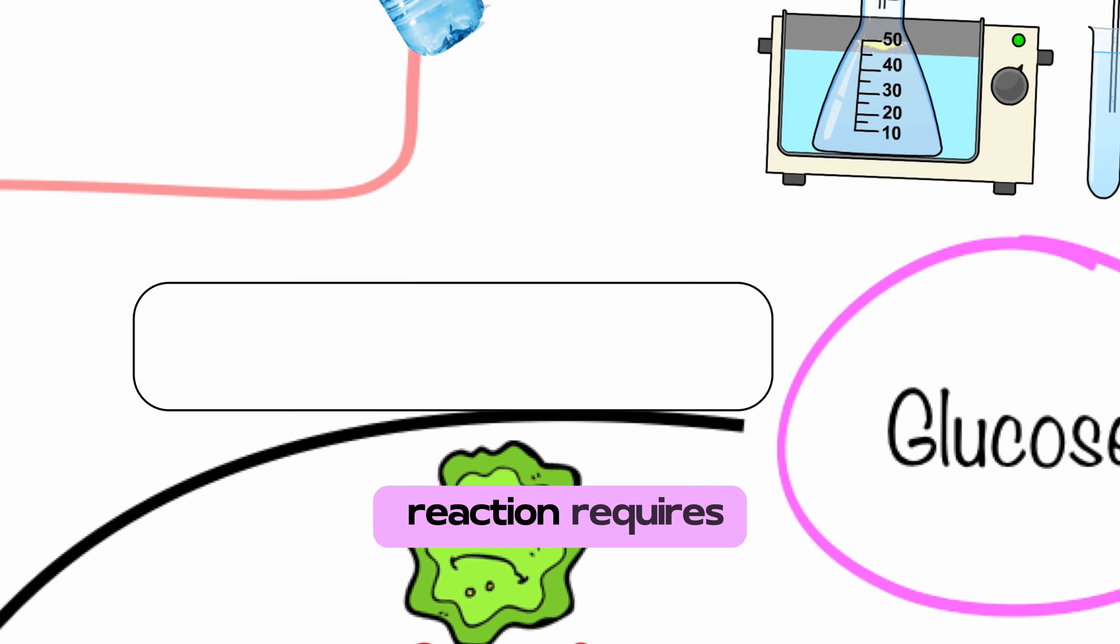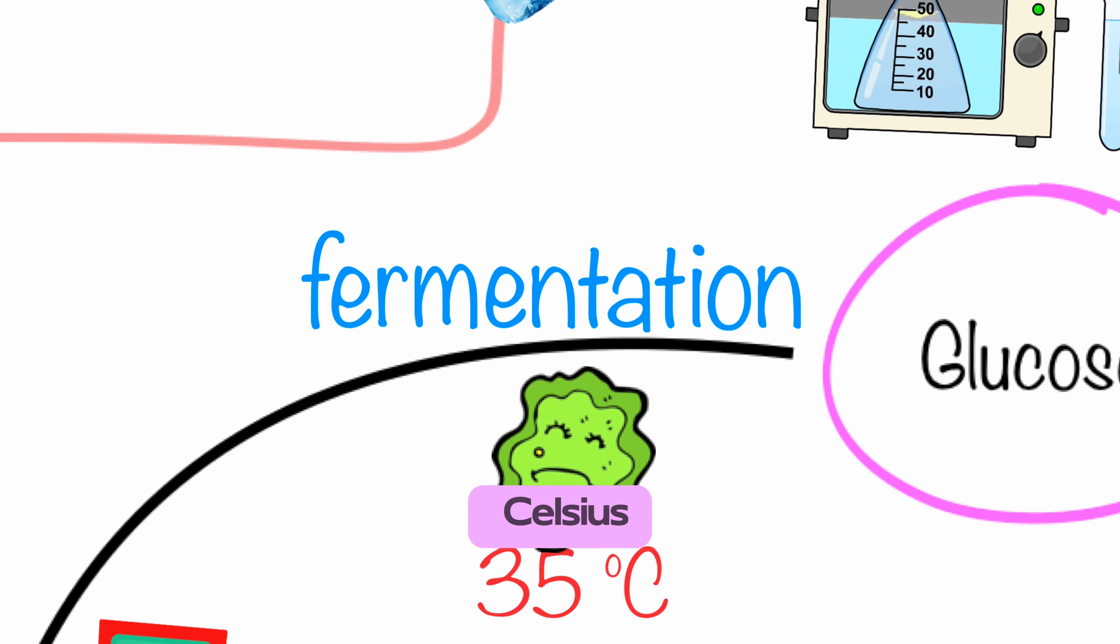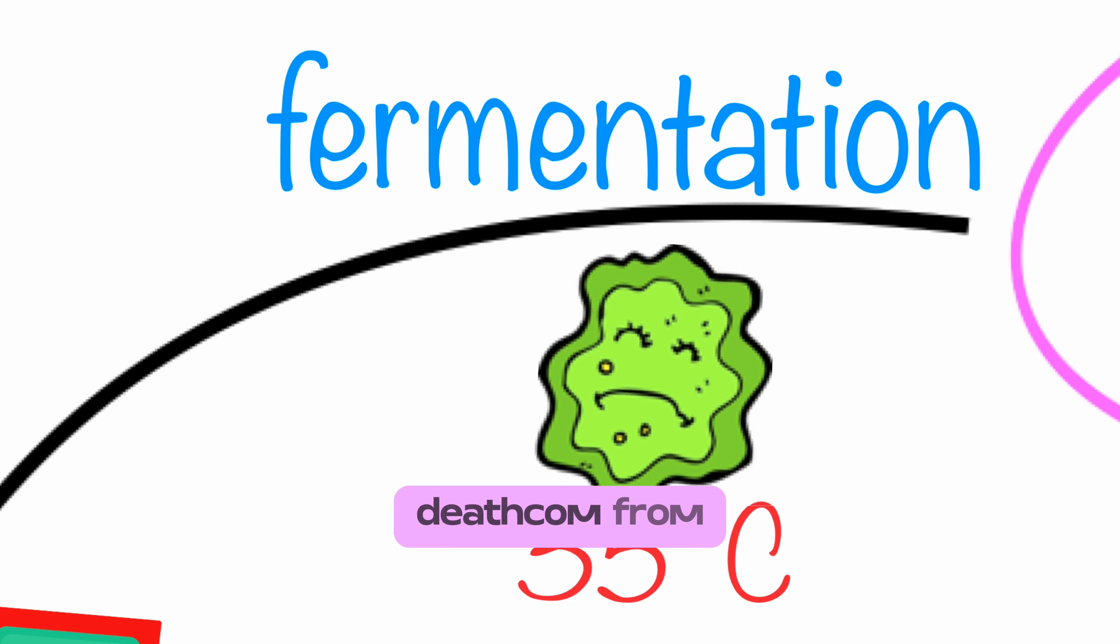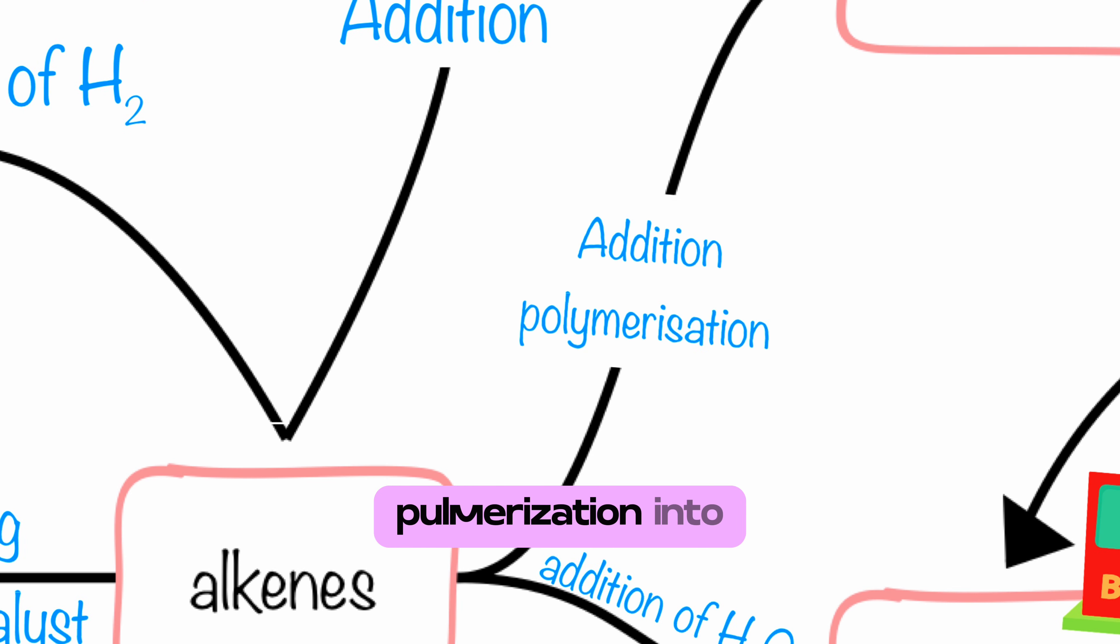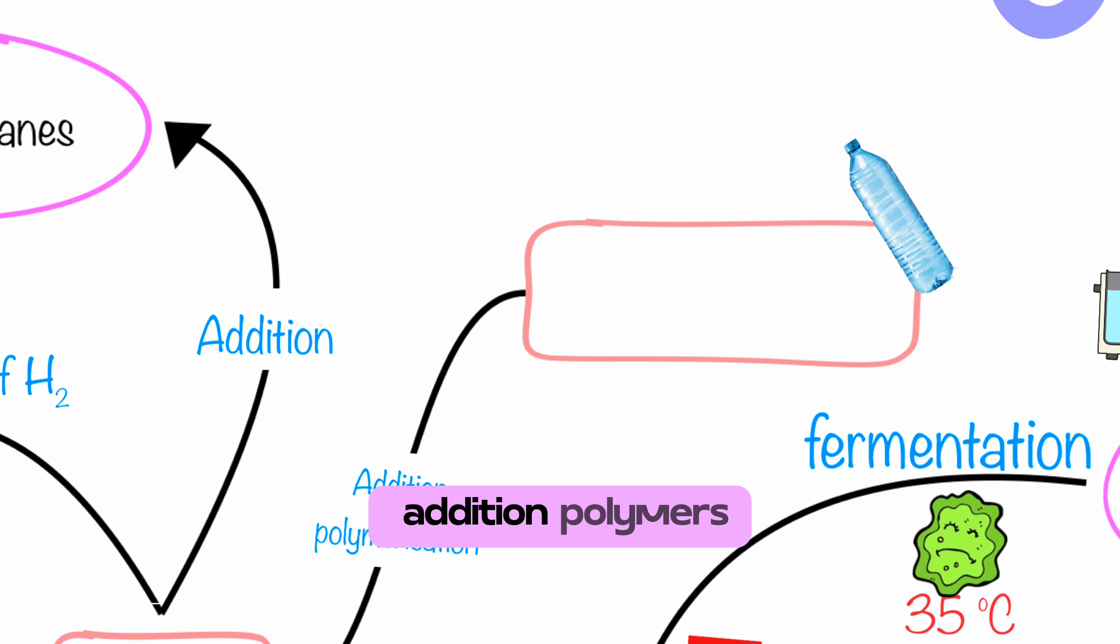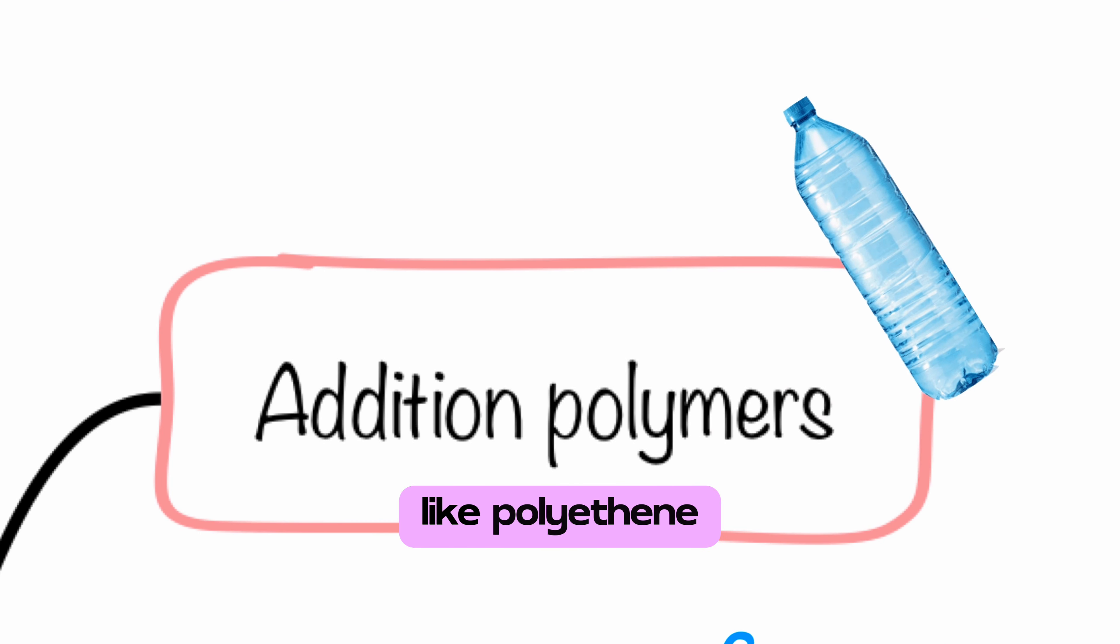This fermentation reaction requires 35 degrees Celsius and enzymes that come from the yeast. Alkenes can also be converted by addition polymerization into addition polymers like polyethene or polypropene.